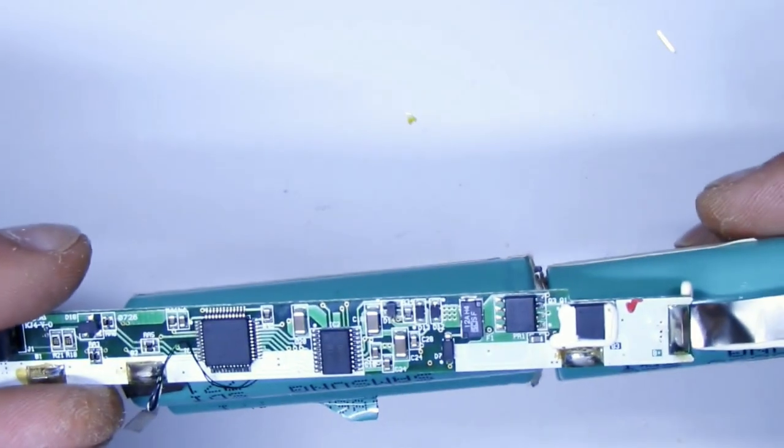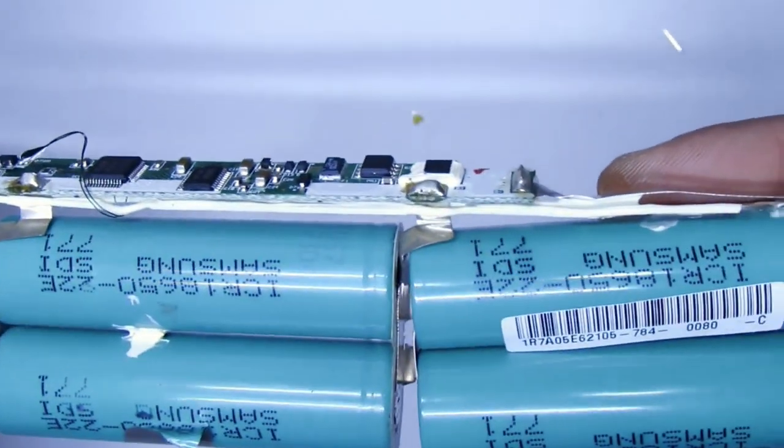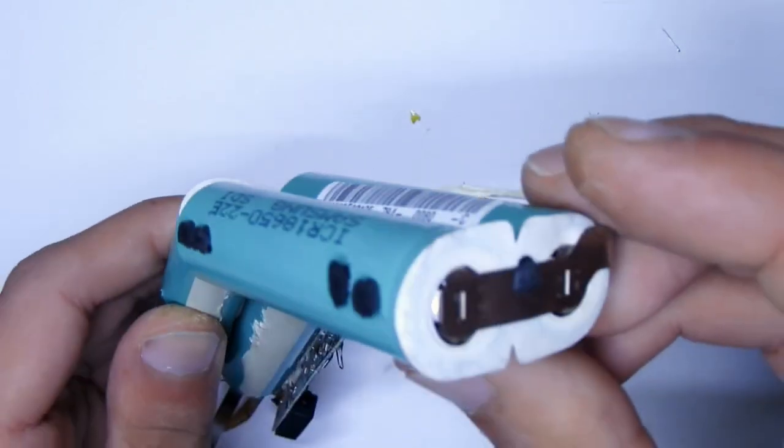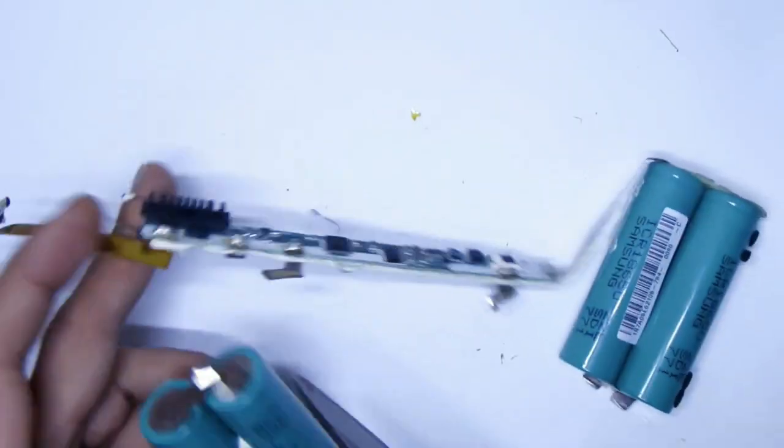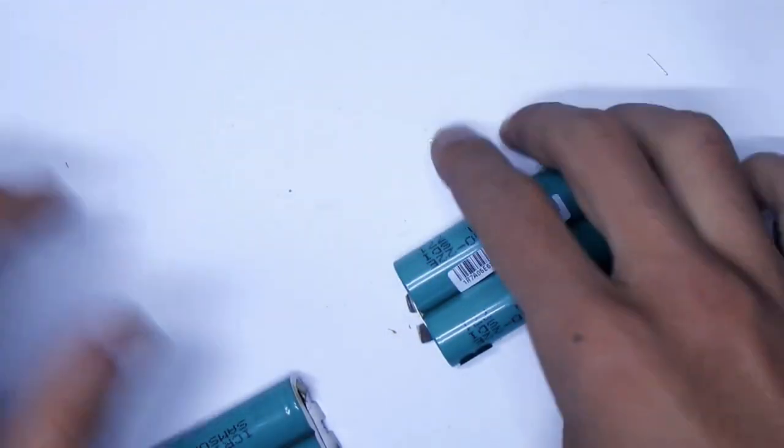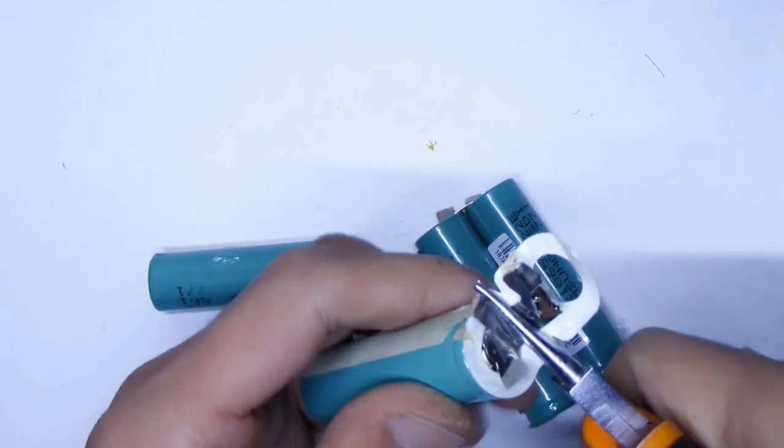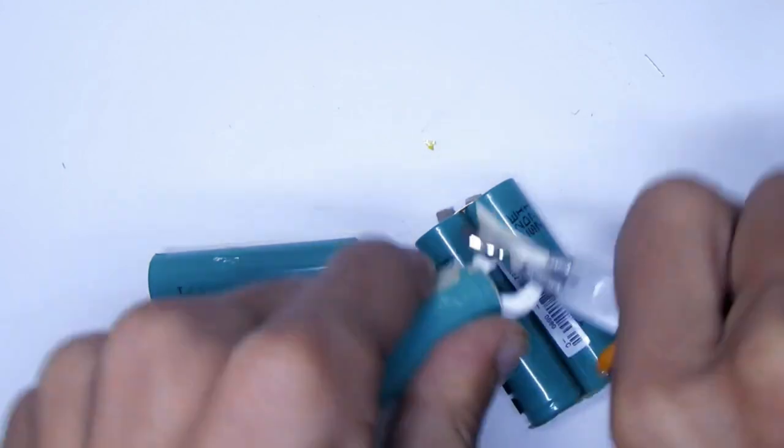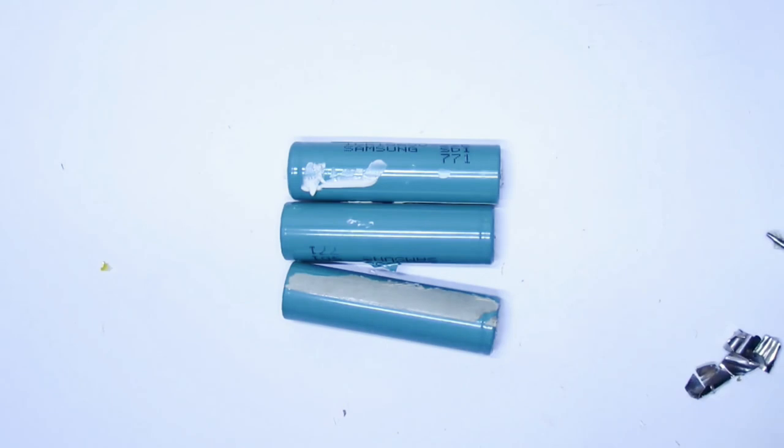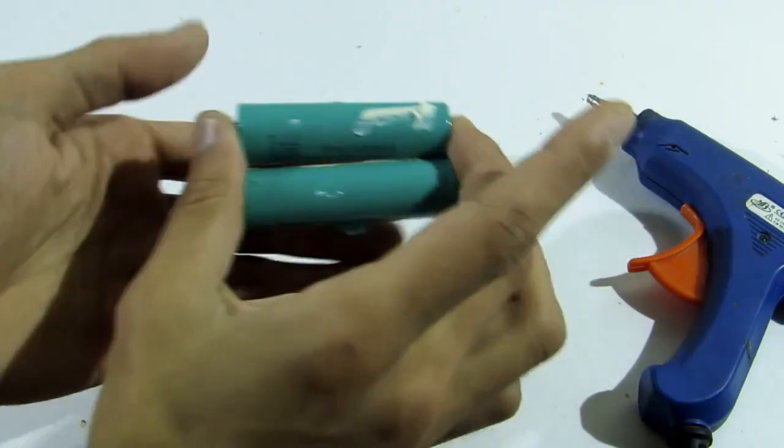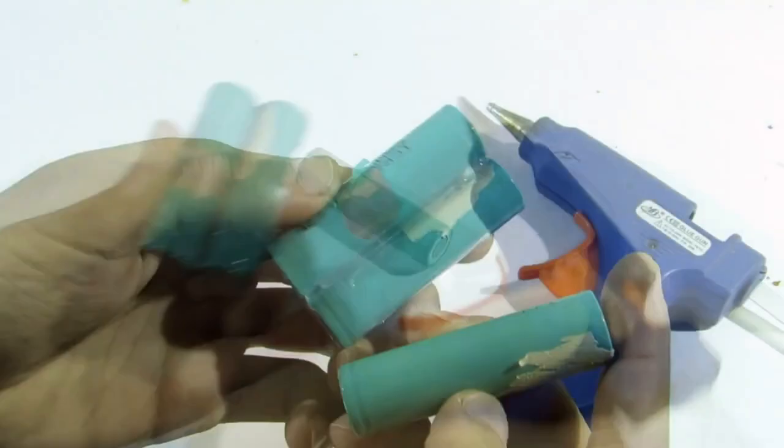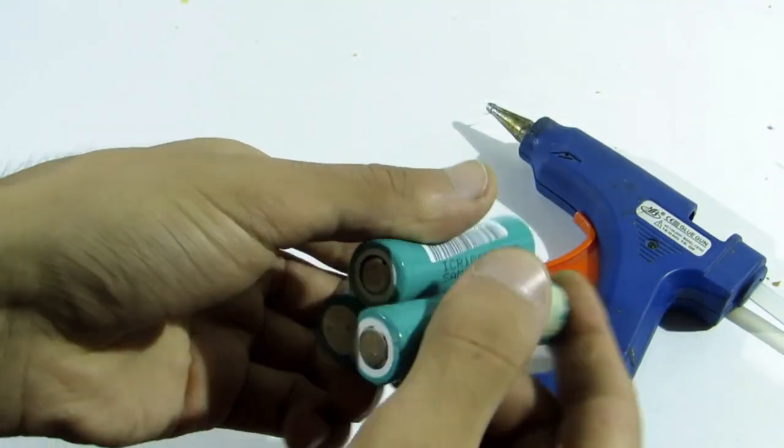Batteries of 18650 standard I got from an old laptop. Disconnect all, check them and choose three pieces. Connect in series, we will have around 11 volt. Join with hot glue. Solder the contacts. Be careful not to overheat the batteries when connecting in series.